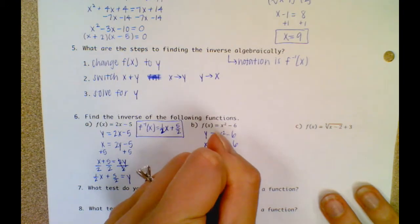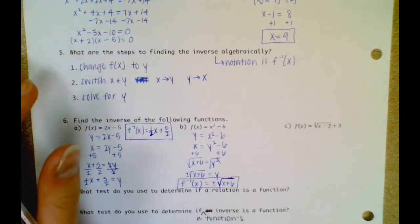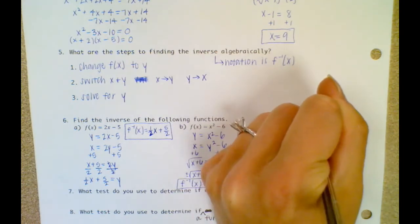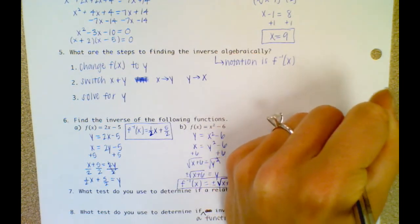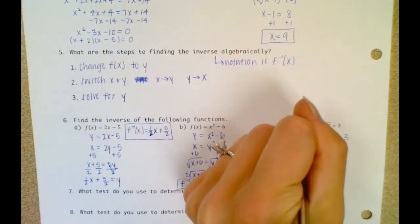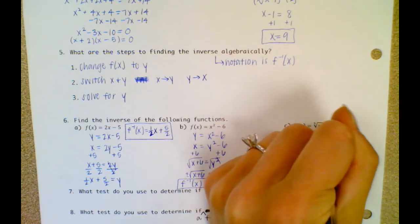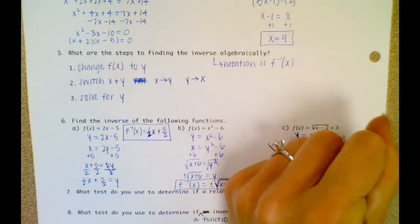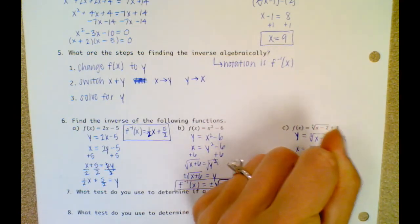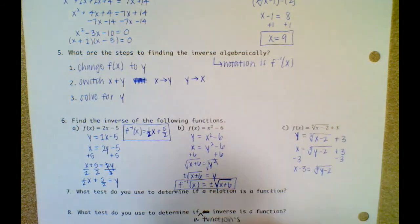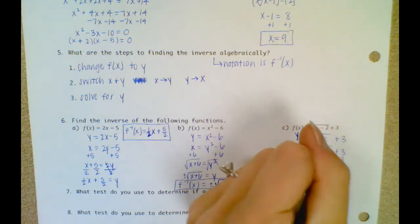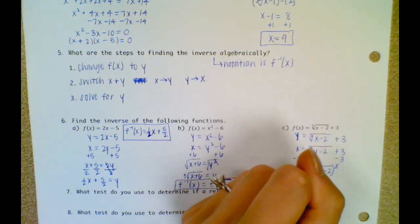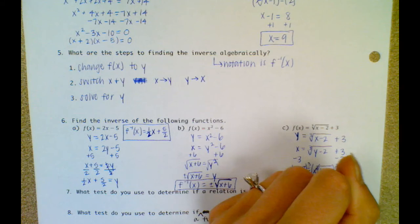Make sure you show that that 6 is inside the radical somehow. Letter C, last one of this part. f of x is y, and we're going to change y to x and x to y. Then solve for y. It's under the radical, so I need to move this 3 over first. Then I need to get rid of this cube root — I'm going to cube both sides to do the opposite, and that will get rid of the cube root. So I get x minus 3 to the third equals y minus 2.